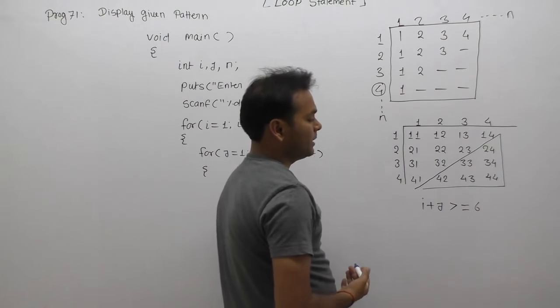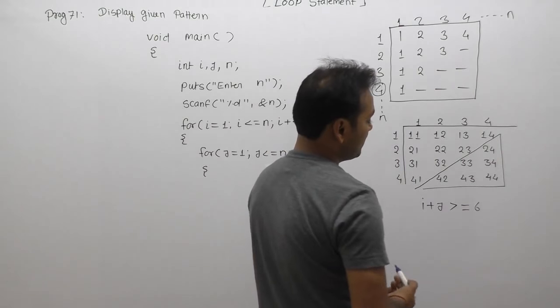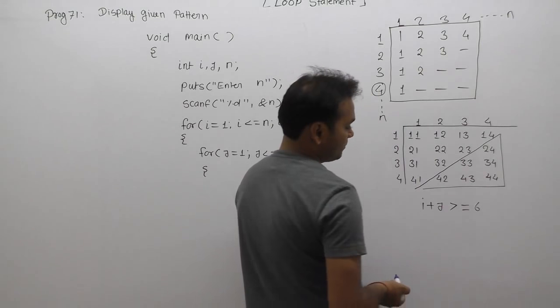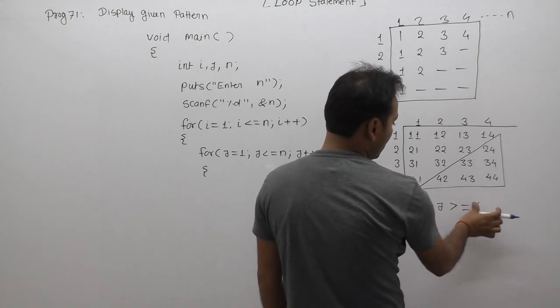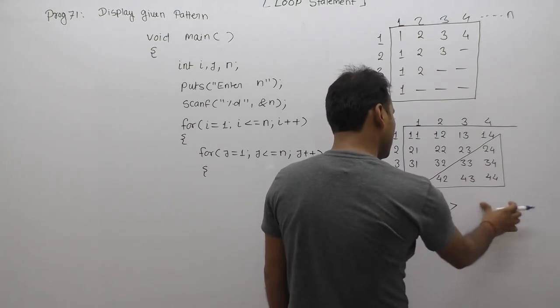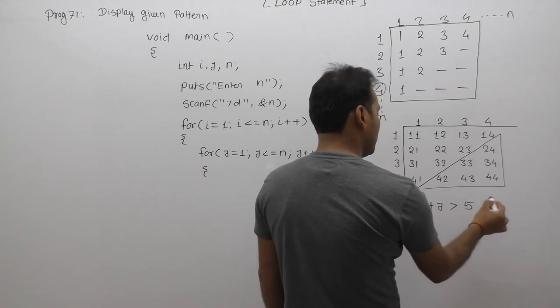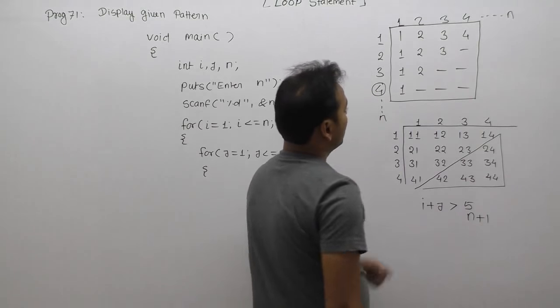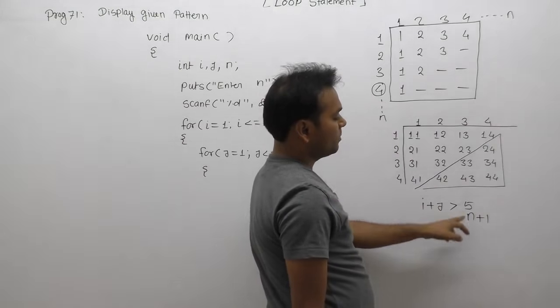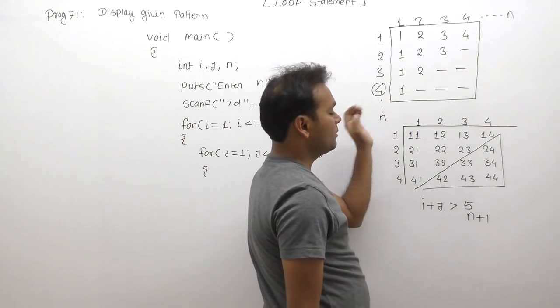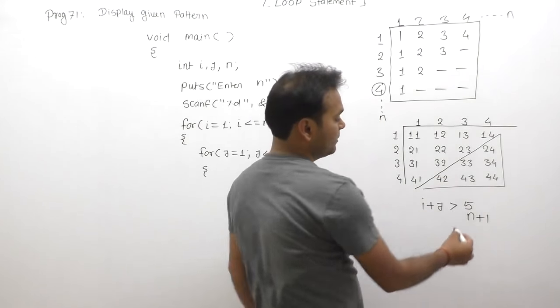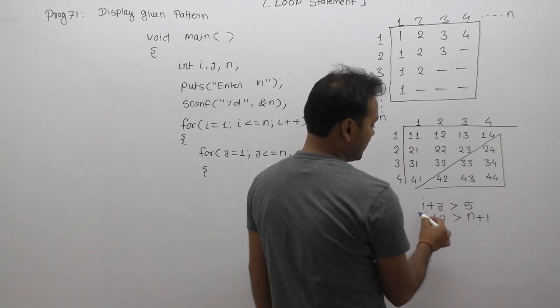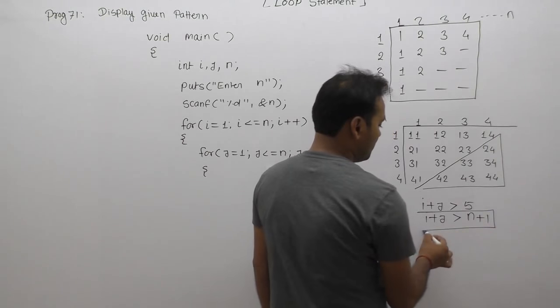The condition we apply is i plus j greater than or equal to 6. Or one more case: we can use the condition i plus j greater than n plus 1.